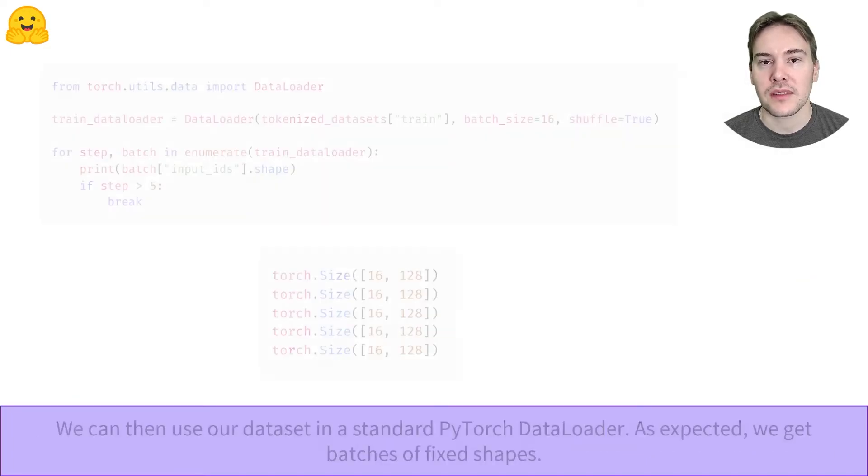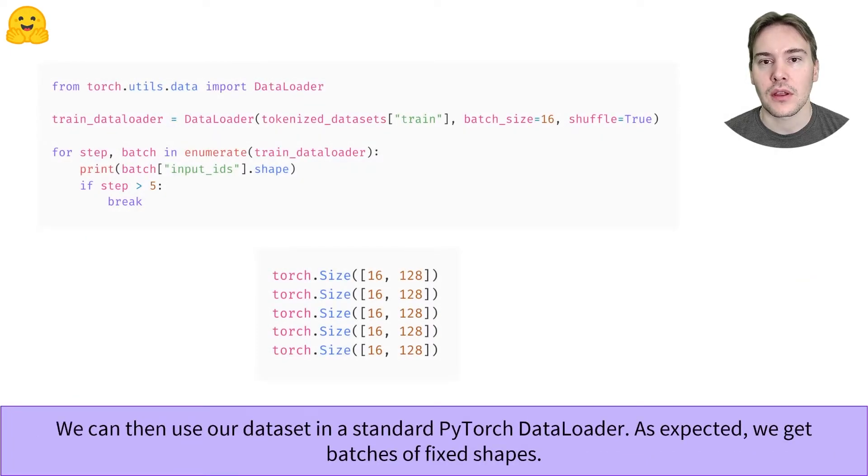we apply the tokenization to all the dataset with padding and truncation to make all samples of length 128. As a result, if we pass this dataset to a PyTorch data loader, we get batches of shape batch size, here 16, by 128.